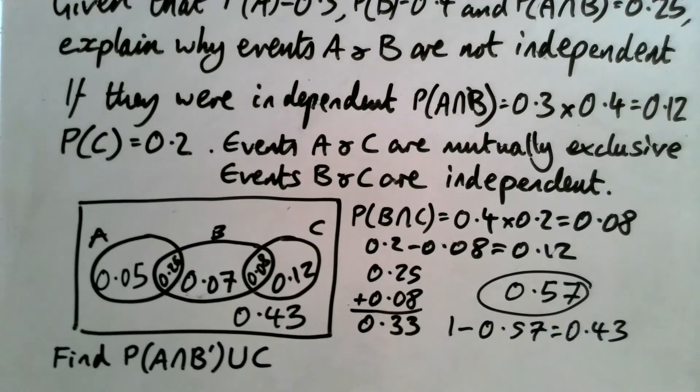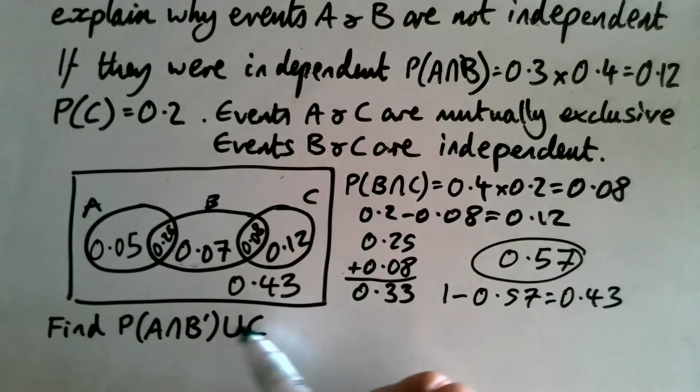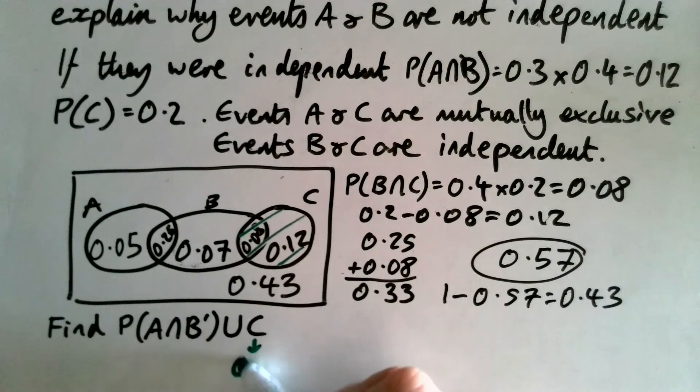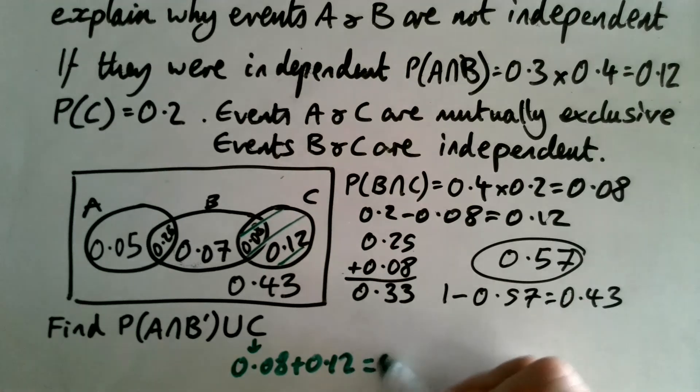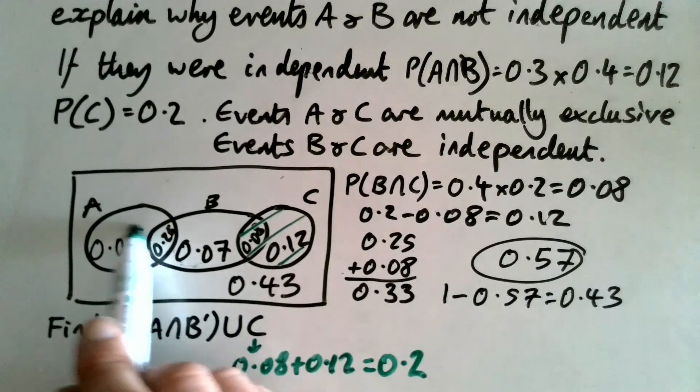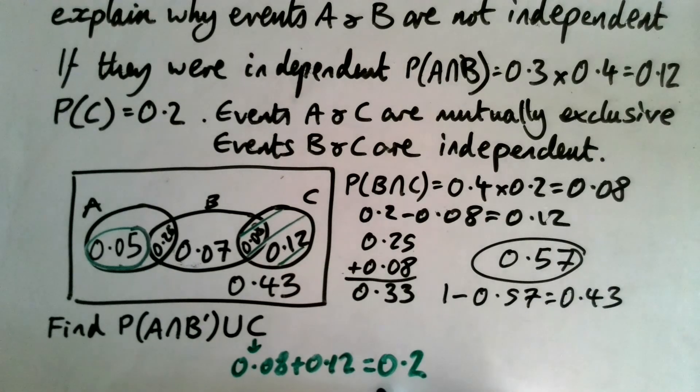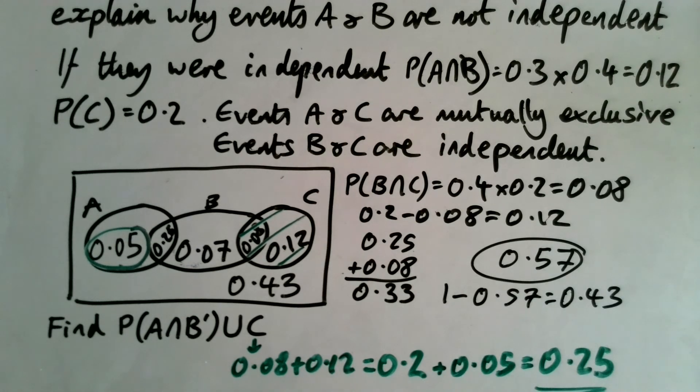Right. Final problem on here. Find the probability that we've got right at the bottom down here of A intersection B dash union C. So what are we thinking? We're thinking it's got to include anything in C. That's the first thing we can say. So that is 0.08 plus 0.12 or just the probability of C, which is what we were told before, which is 0.2. And it's also that's unioning with A intersection not B. So it's got to be an A and not B. So that's actually that bit there. So we are going to be adding that to the 0.2 to get 0.25. And that is our final answer on that.